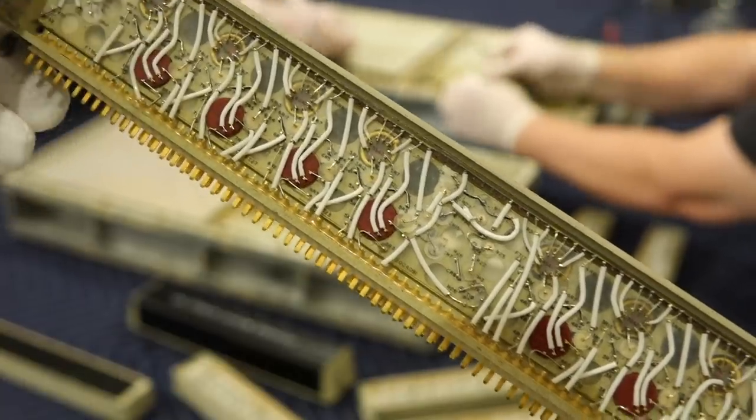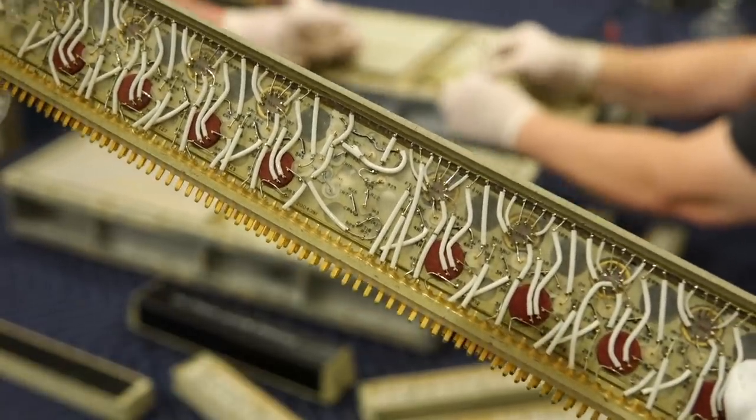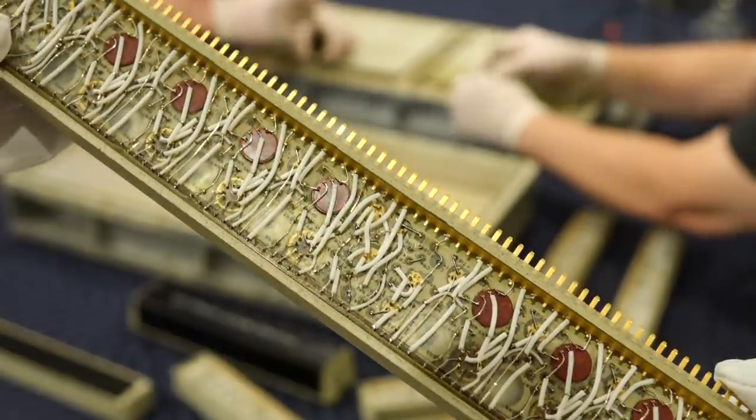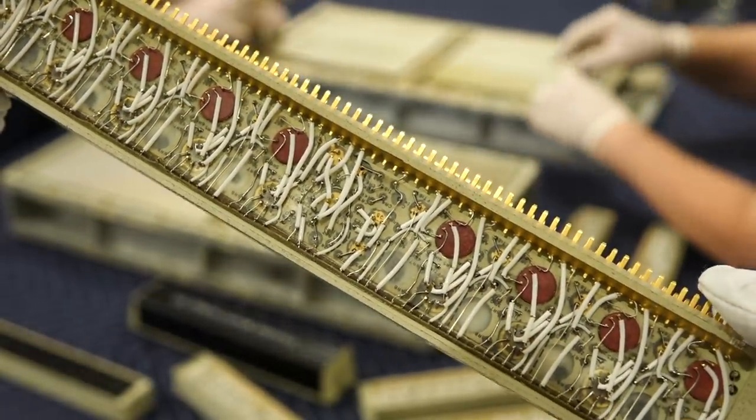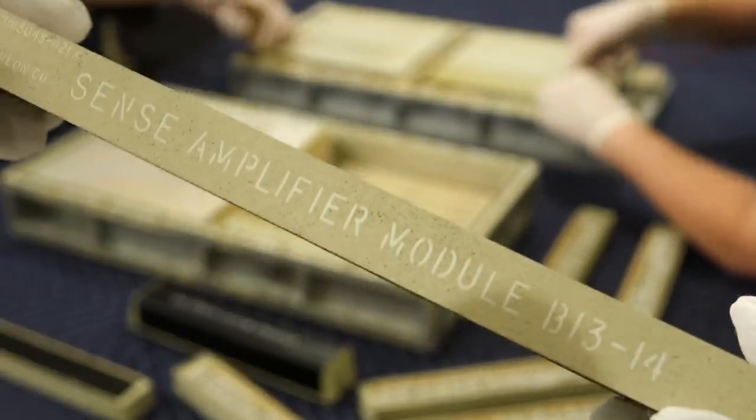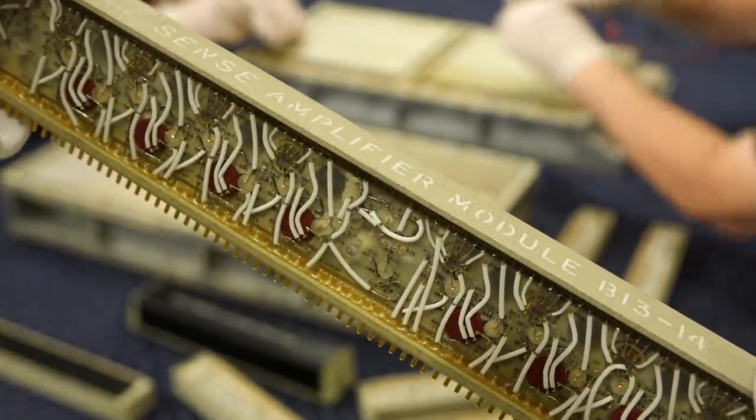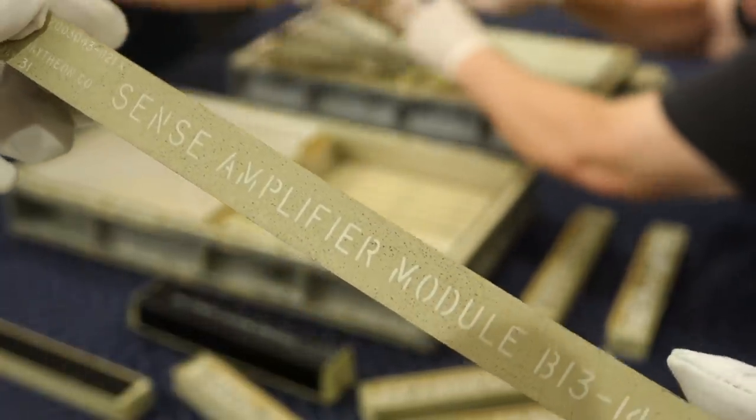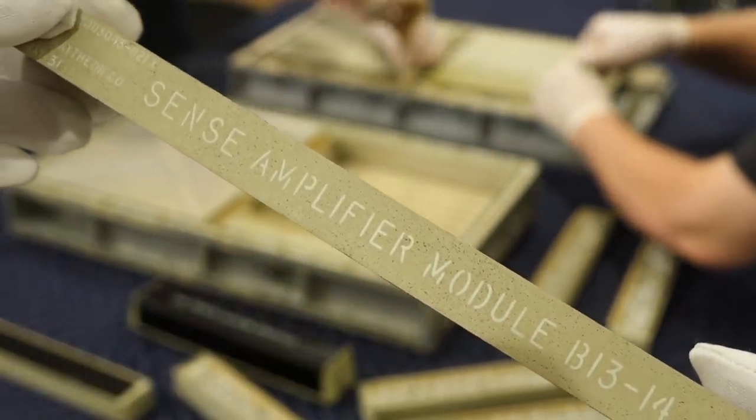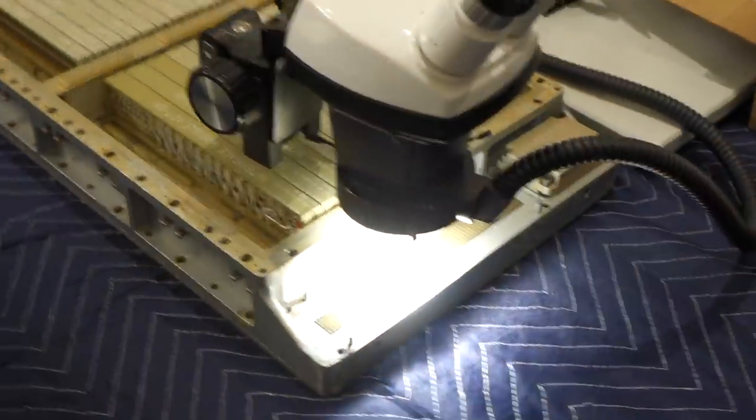Sense amplifier modules like this one are in charge of reading the faint data signals back from the cores. They are very special. To increase density, the designers decided to use analog ICs. They were made by Fairchild and they were the first such analog ICs. You can see many of them packaged in the round transistor-like cans with many leads. They surely represented a technology leap for analog design at the time.